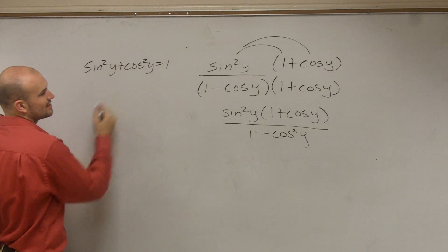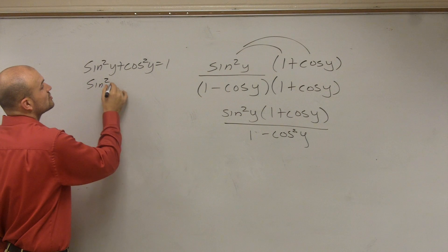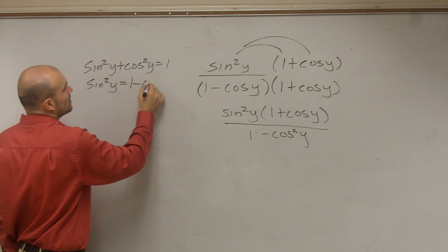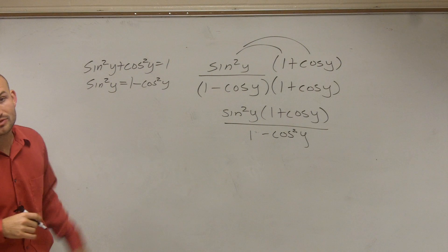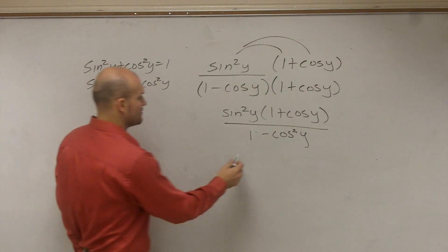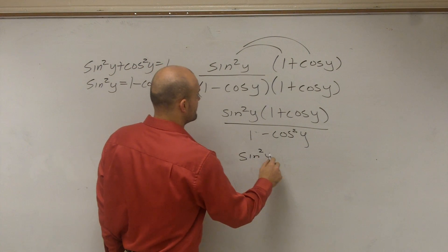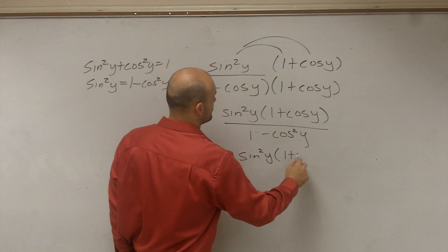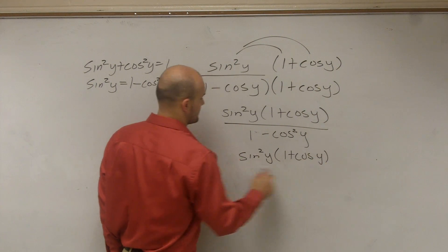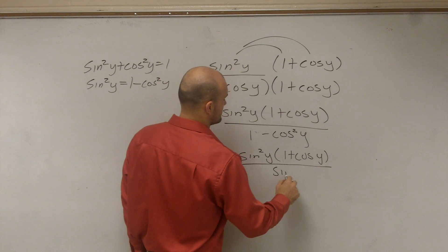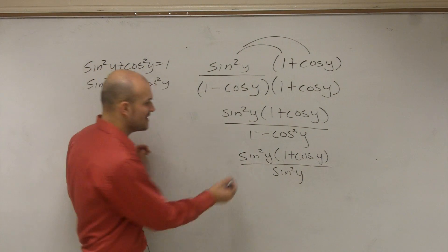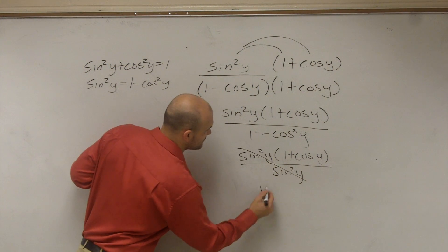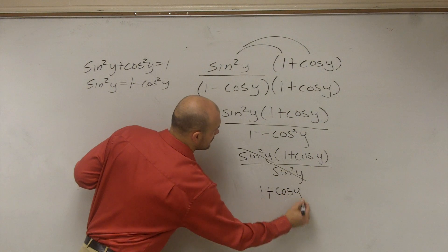So if we subtracted the cosine over there, we could say sine squared of y equals 1 minus cosine squared of y, right? So we could say this equals sine squared. So therefore, we have sine squared of y times 1 plus cosine of y divided by sine squared of y. Well, sine squared of y divides out to 1, so we're just left with 1 plus cosine of y.